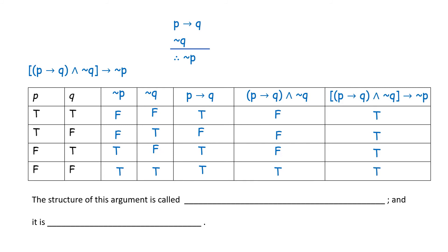Observe that the final column — all entries are true. The structure of this argument is called contrapositive reasoning, and it is valid.